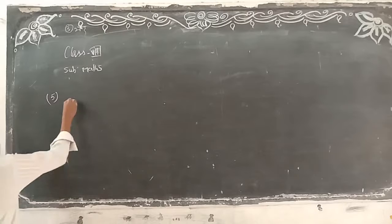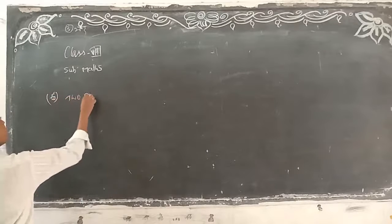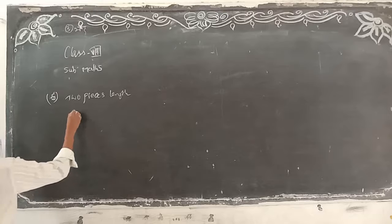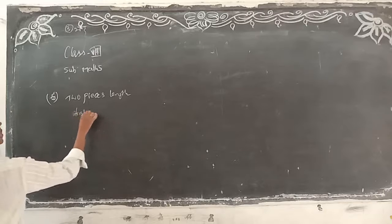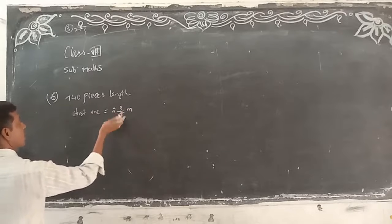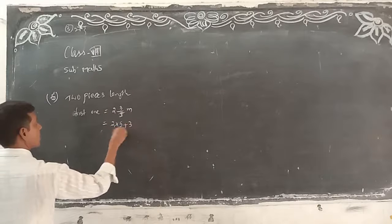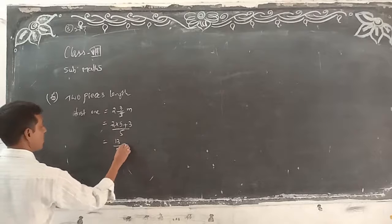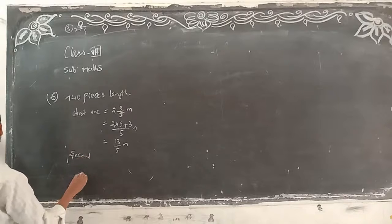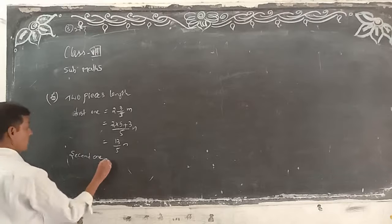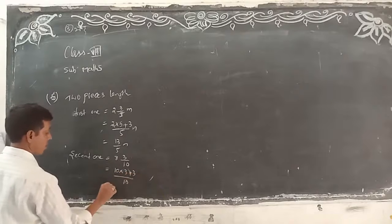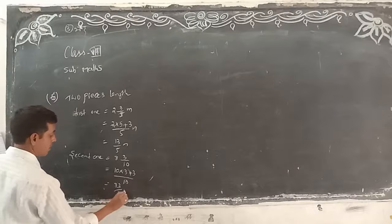Next: two pieces of rope — sixth problem. First piece: 2 and 3 by 5 meters. Converting into an improper fraction: two into five plus three by five — how much? Two fives are ten, plus three, equals 13 by 5. Second piece: 3 and 3 by 10. Ten into three plus three by ten — how much? Thirty plus three: 33 by 10 meters.